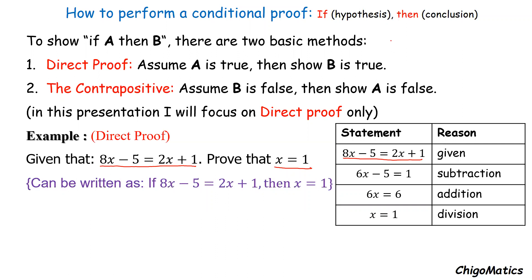Then from there we subtract 2x both sides to result in 6x minus 5 equals 1. From there, we add 5 both sides to reach 6x equals 6. Then we divide by 6 both sides, we get x equals 1. So we have arrived at our conclusion and proved that if 8x minus 5 equals 2x plus 1, then x equals 1. That is direct proof for you.